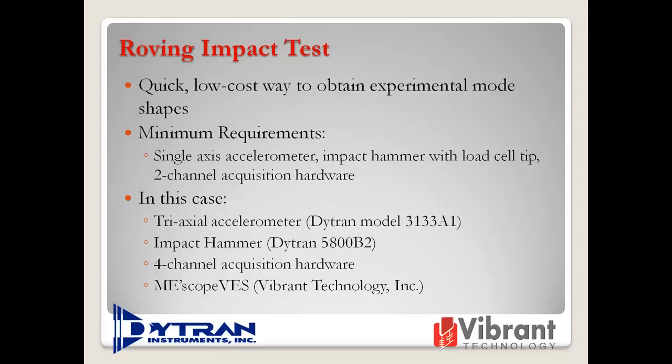A roving impact test can be completed accurately with as little as a single-axis accelerometer, an impact hammer with a load cell at the tip, and a two-channel acquisition hardware front end. The acquired data can then be processed in Emiscope VES to determine and display the mode shapes and animation.